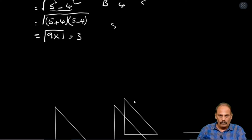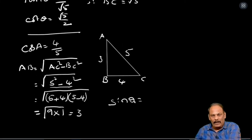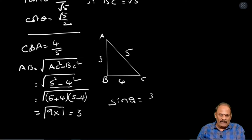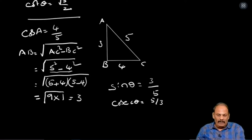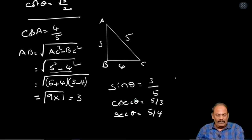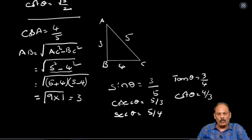Now we need the other values. Sin theta: opposite by hypotenuse, that is 3 by 5. Cosecant theta: reverse to the sine, that is 5 by 3. Secant theta: reverse to the cos, that is 5 by 4. Tan theta equal to 3 by 4. Cot theta: reverse to the tan, that is 4 by 3. This second sum is over.